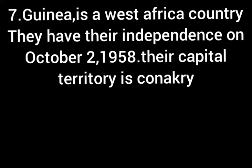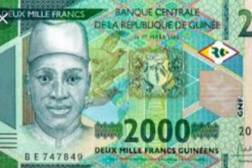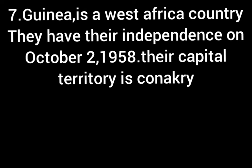Number 7, Guinea. Guinea is a West African country. This is their map, flag, and currency. The name of their president is Alpha Condé. They gained their independence on October 2, 1958. Their capital territory is Conakry.